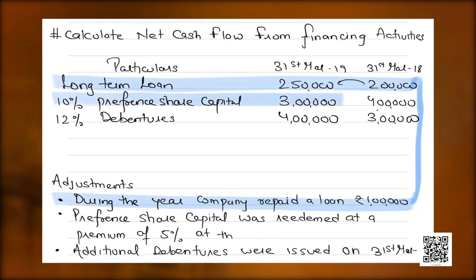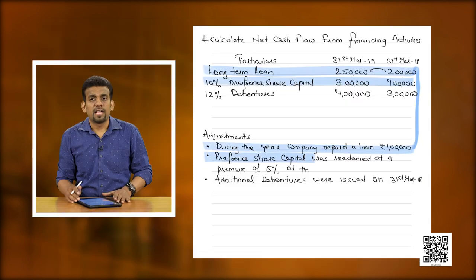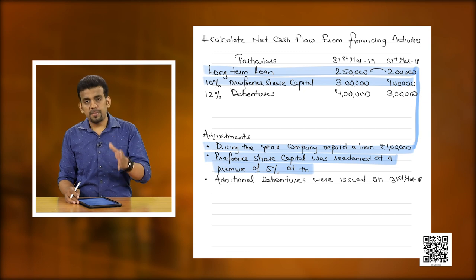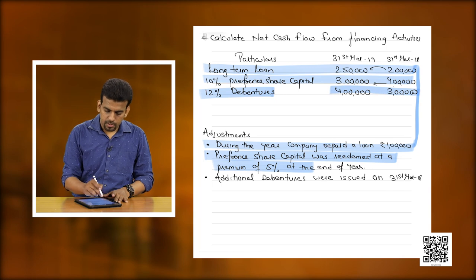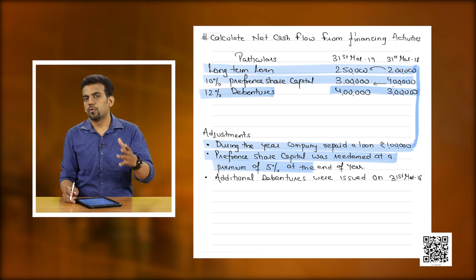We have preference share capital which has reduced from 4 lakh to 3 lakh, with an adjustment that it was redeemed at a premium of 5 percent at the end of the year. Sometimes preference shareholders get their money back at a premium. There is a reduction from 4 lakh to 3 lakh done at a premium of 5 percent. We also have 12 percent debentures increasing from 3 lakh to 4 lakh, with additional debentures issued on 31st March — i.e., at the end of the year.